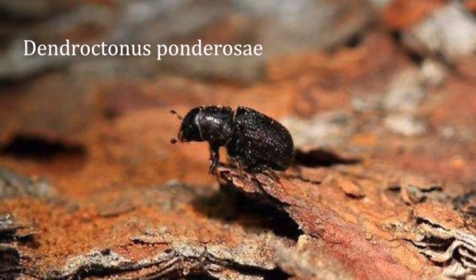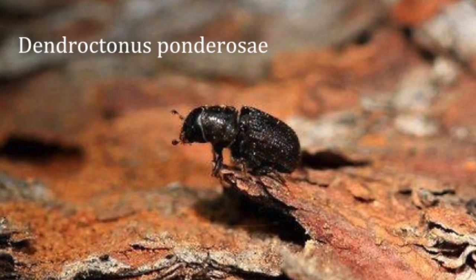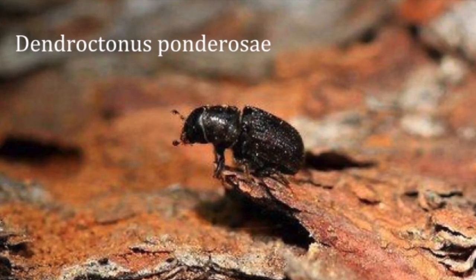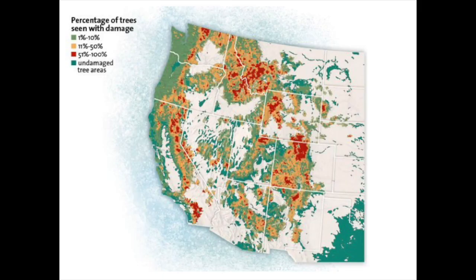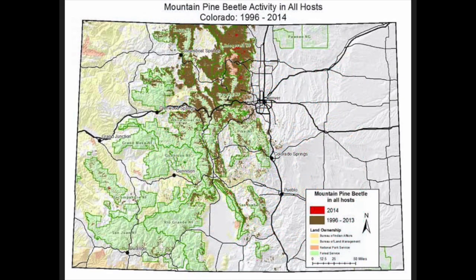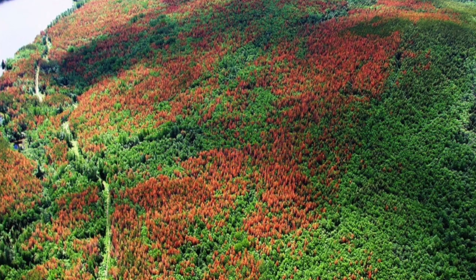The Mountain Pine Beetle, classified as Dendroctonus ponderosa, has created a huge outbreak in North America. It originated in British Columbia and has since spread to Colorado and the Rocky Mountain National Park. In the beginning of 2013, there were over 264,000 acres of trees inhabited by mountain pine beetles.